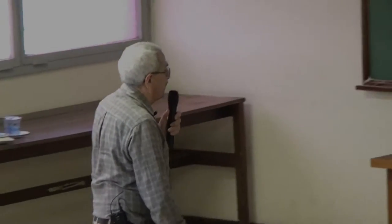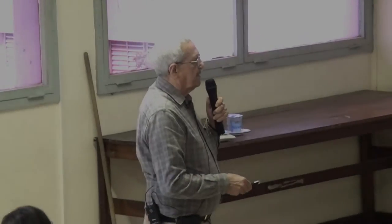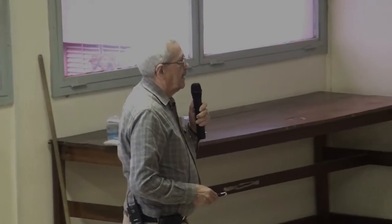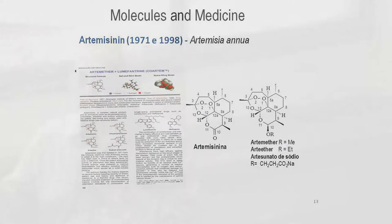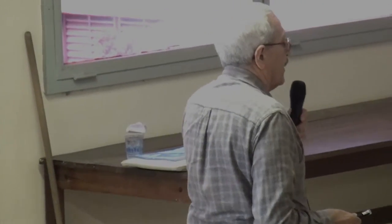Como exemplo da importância desse livro, ele apresenta a molécula da artemisinina, de uma planta usada frequentemente há muito tempo na China para tratamento da malária, retirada da planta Artemisia annua. Já à direita, temos derivados oriundos desse tipo de molécula, estimulados por ela, com maior poder de combate contra a malária.